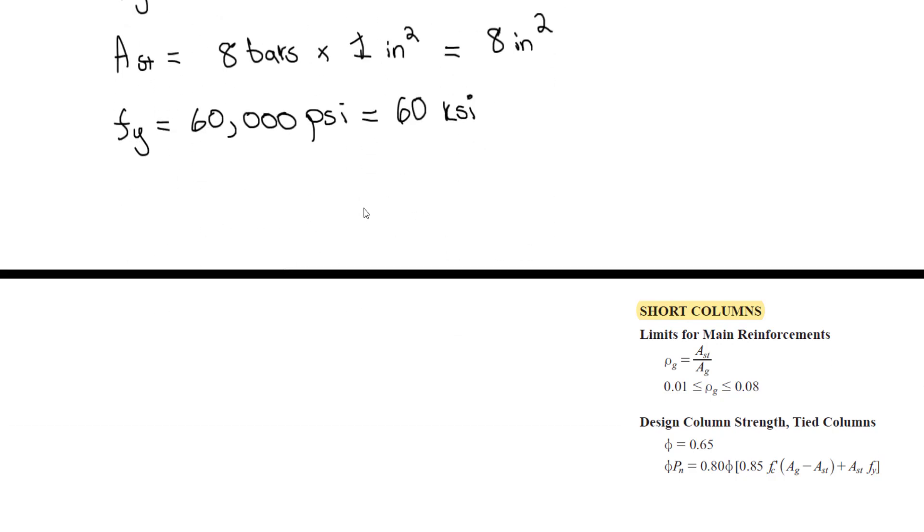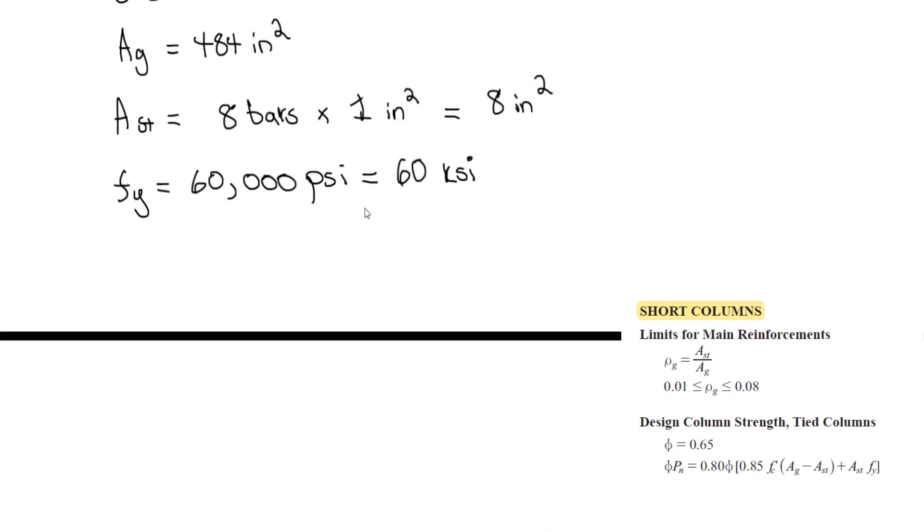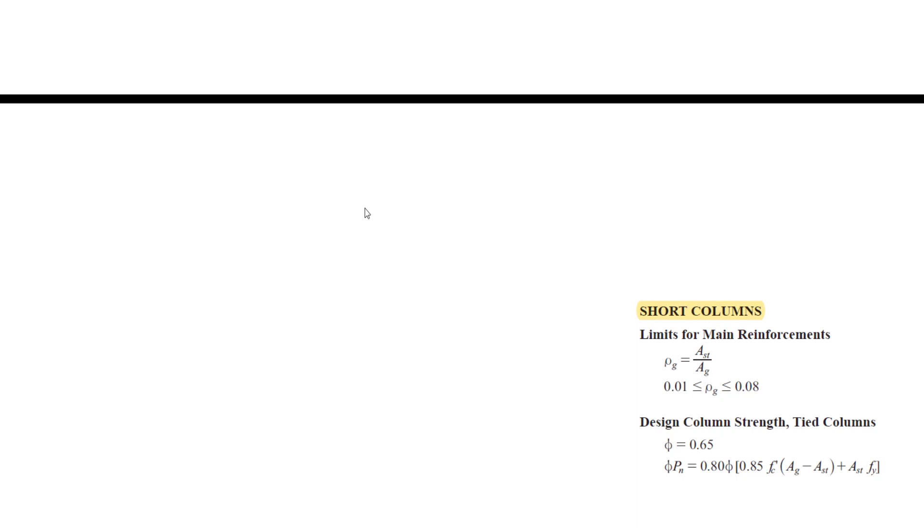Now we can use the equation. The ultimate axial strength equals 0.80 times phi, which is 0.65, times the bracket: 0.85 times F'C, which is 4 ksi.